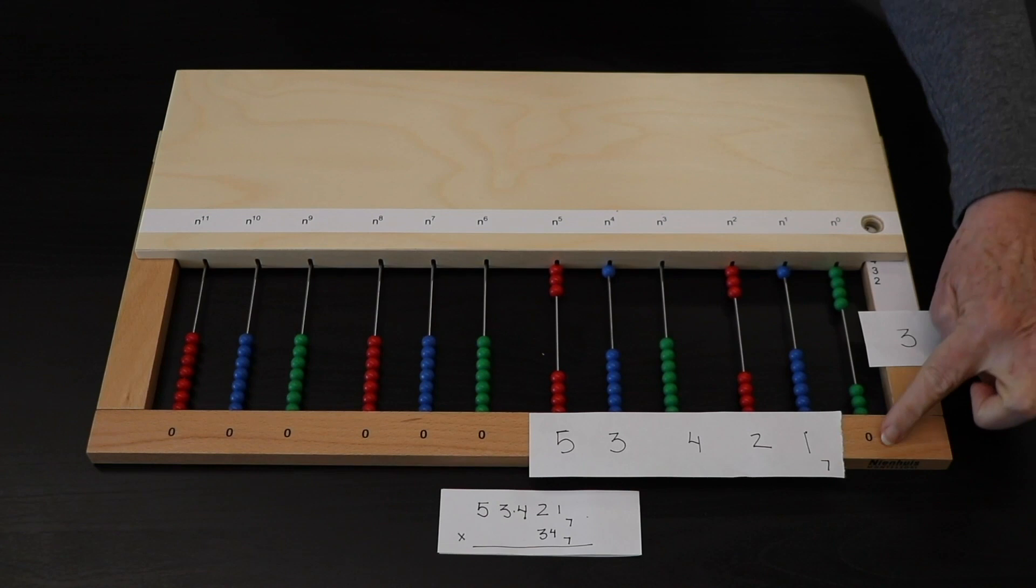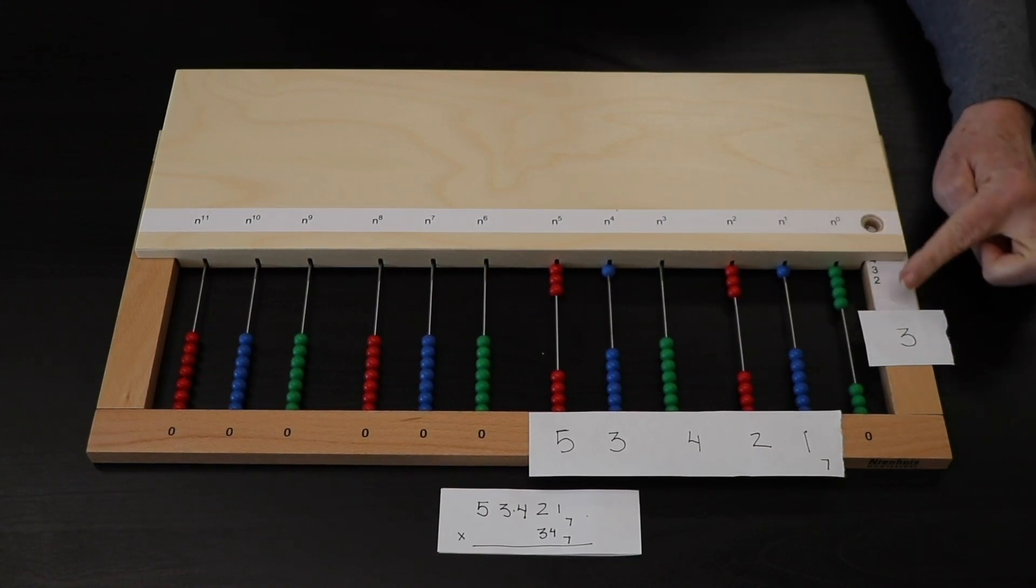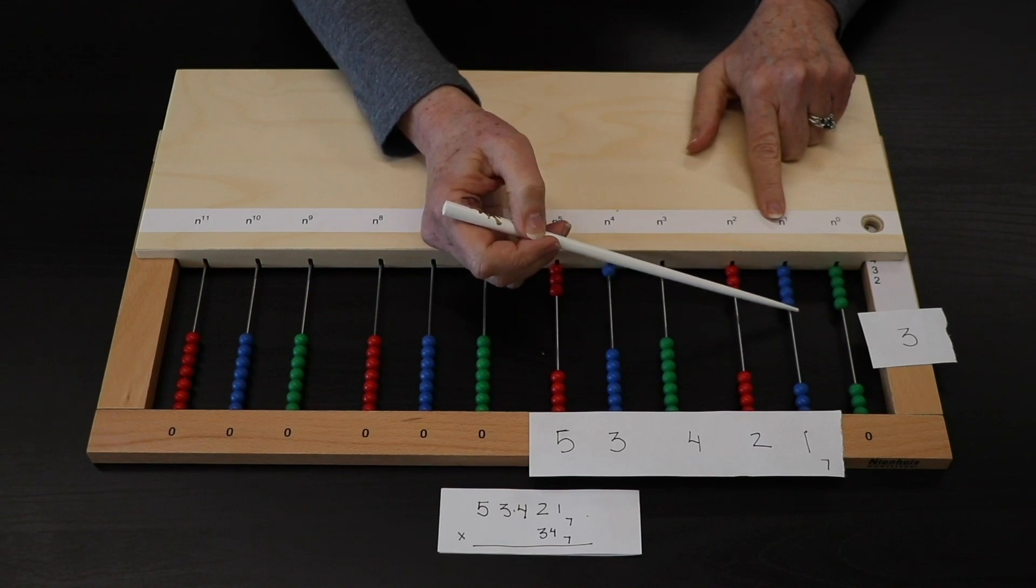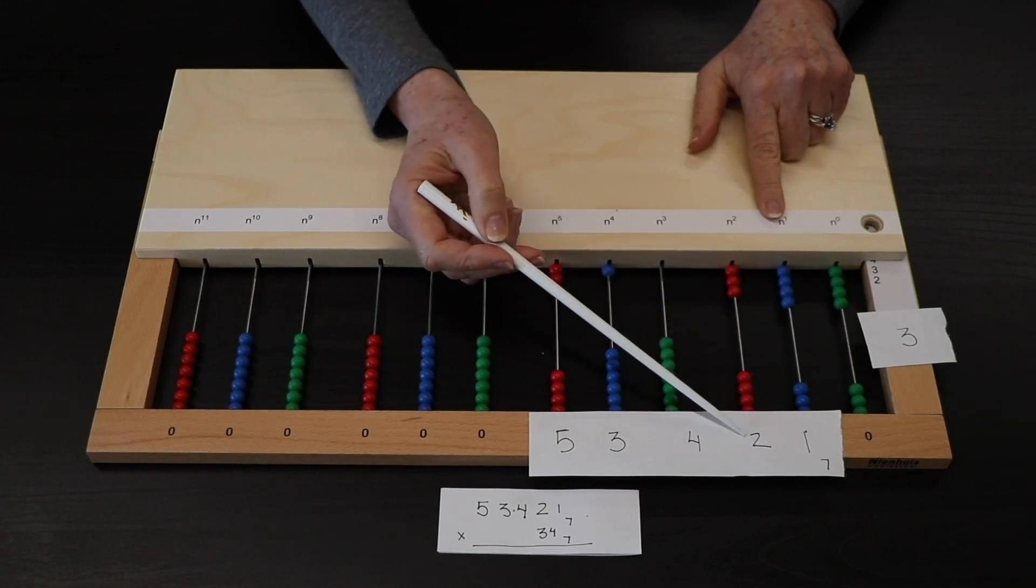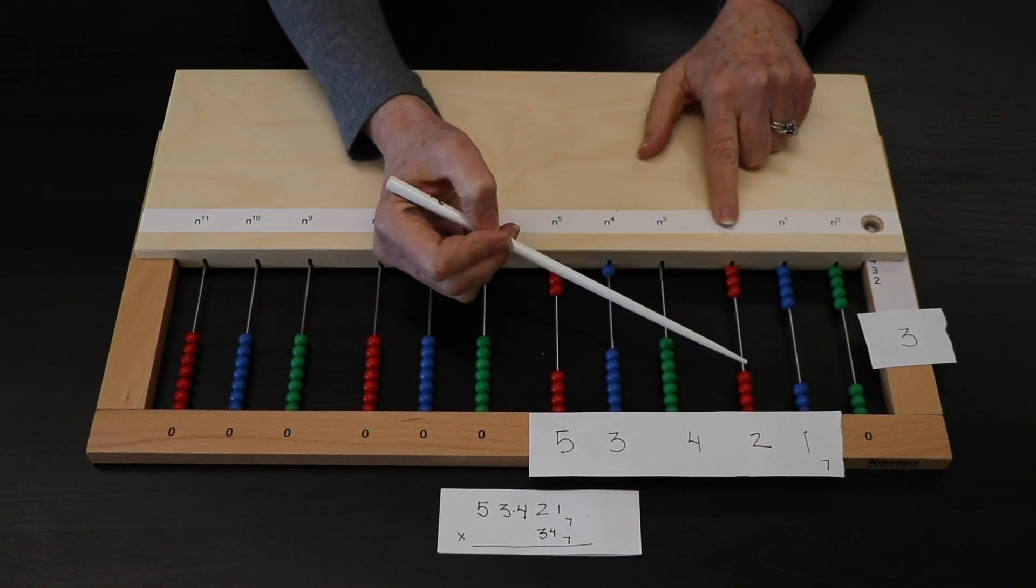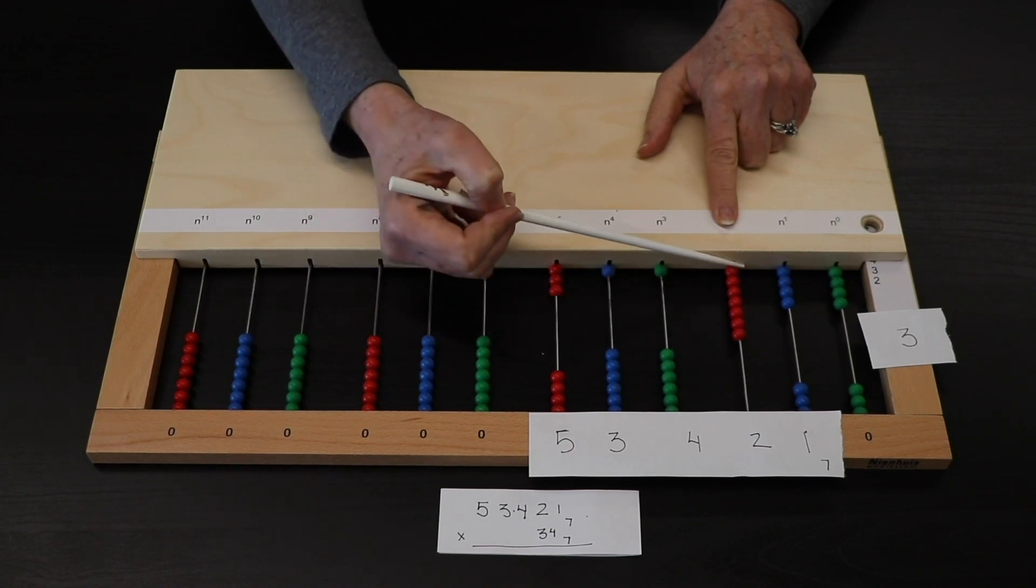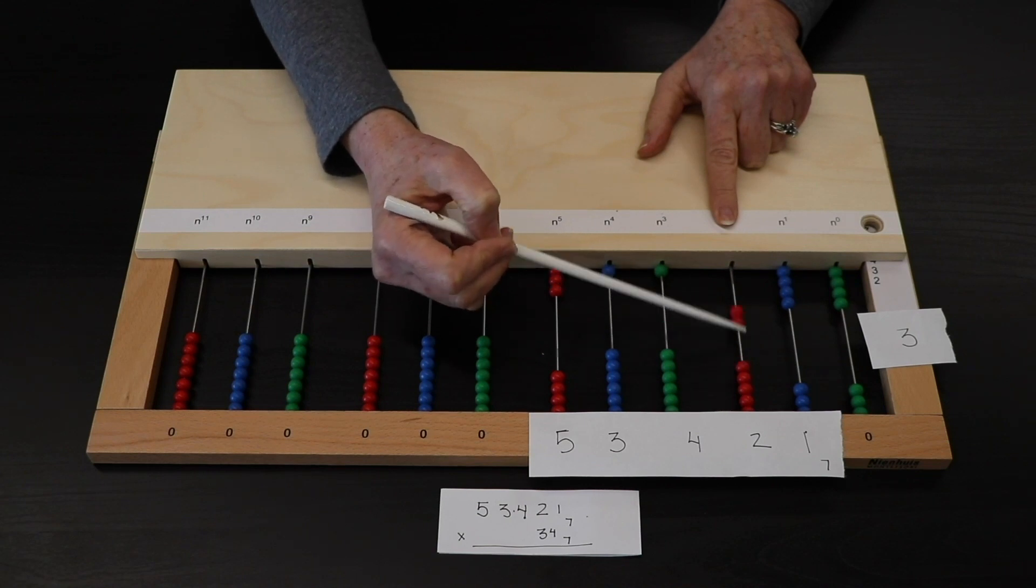So, 3 times 0 is 0. 3 times 1 is 3. 3 times 2 is 6 in base 7. 1, 2, 3, 4. Exchange. 5, 6.